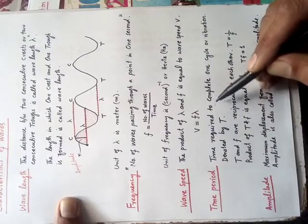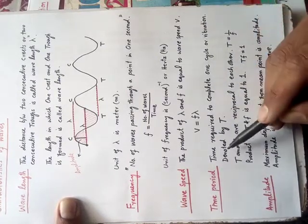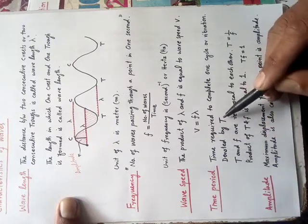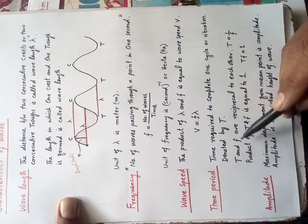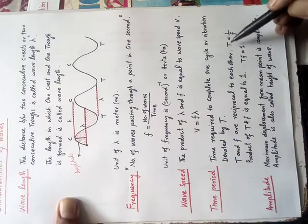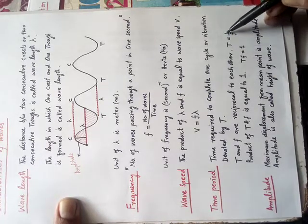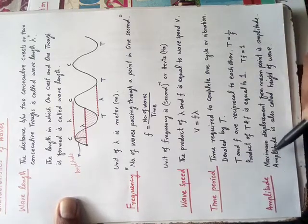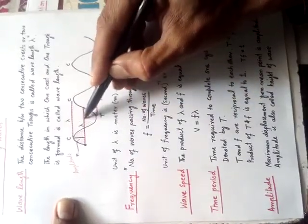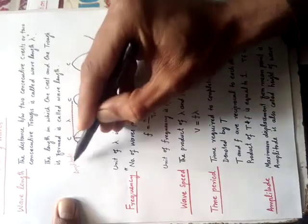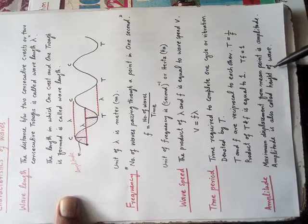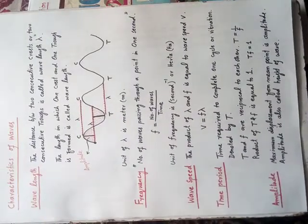Time period is the time required to complete one cycle or one vibration; it is denoted by T. Time period and frequency are reciprocals of each other: T equals one over f, or f equals one over T, and their product T times f equals one. Amplitude is the maximum displacement from the mean point — the maximum distance of a crest or trough from the mean position. Amplitude can also be called the height of the wave. These were the characteristics of waves. Please write these neatly on your presentation paper — they will be part of your test. Thank you very much.